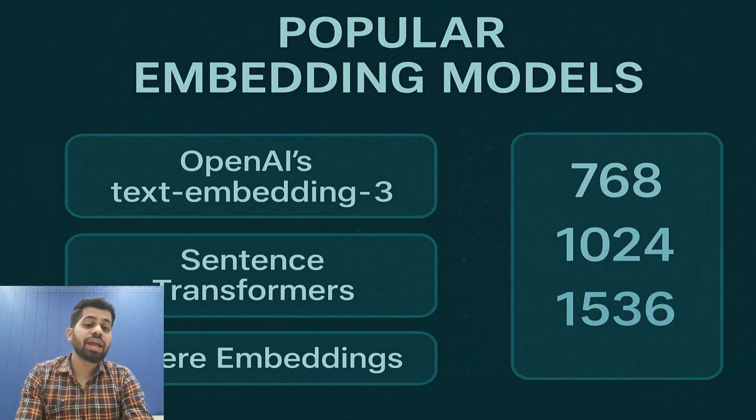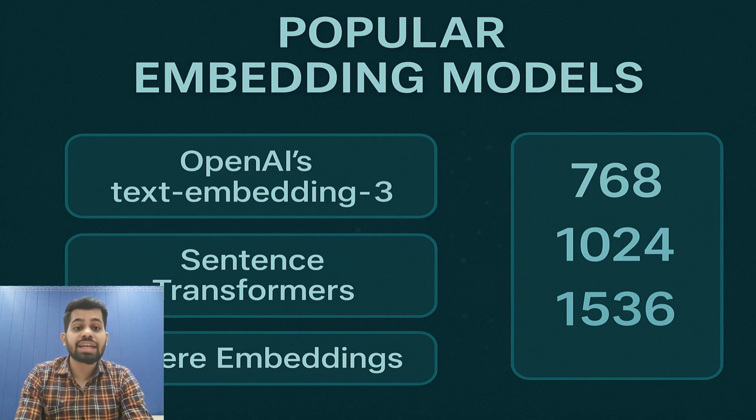Considering this statement: the cat sat on the mat and a feline rested on the rug would be surprisingly close. Popular embedding models like OpenAI Text Embedding 3, Sentence Transformers, or Cohere Embeddings and many more are integrated with the LangChain ecosystem. Each model creates vectors of various different dimensions. The typical range is 768, 1024, or 1536 dimensions. More dimensions means it can capture more nuance, but they also take more storage and computation.